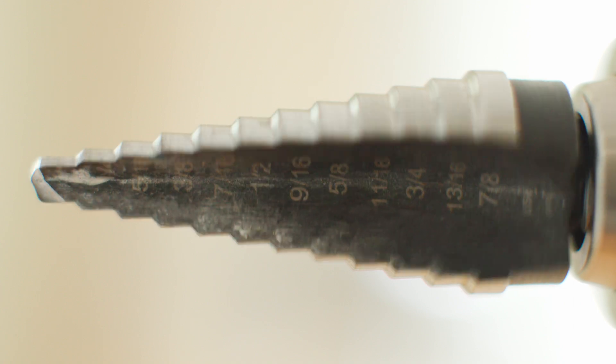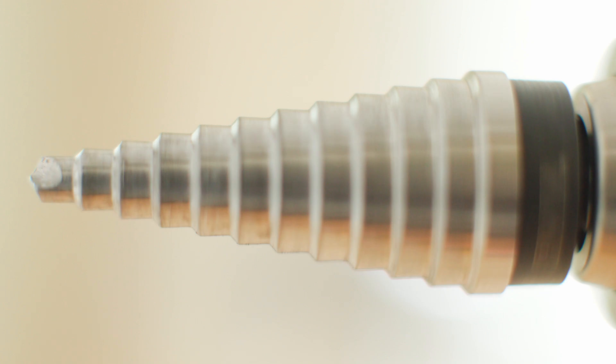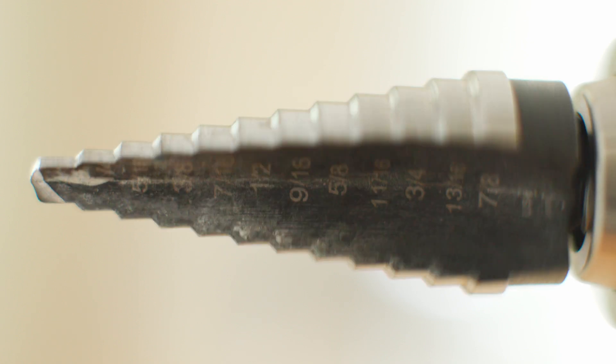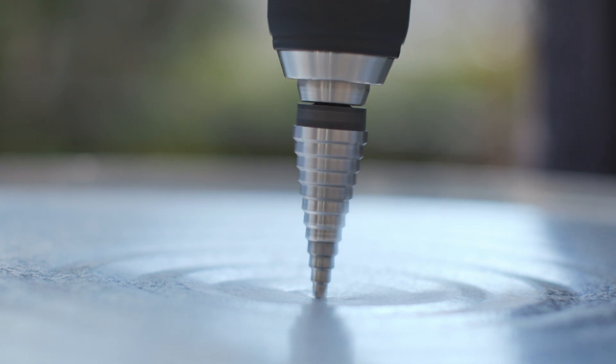A stepped drill bit allows an electrician to drill the correct size hole in a panel or a junction box. And within reason, you can create a whole bunch of different hole sizes without having to change drill bits. Just center punch wherever you want the hole to be, start drilling, and go.